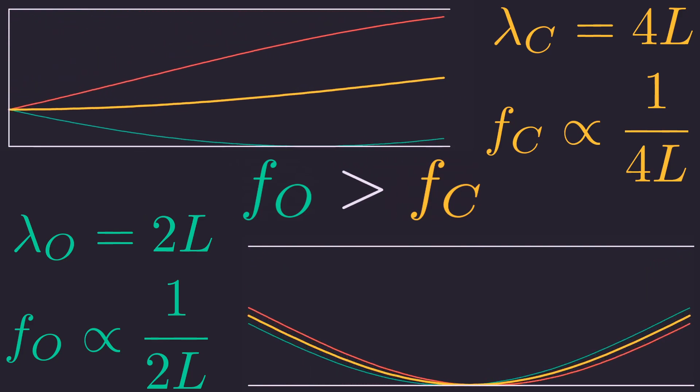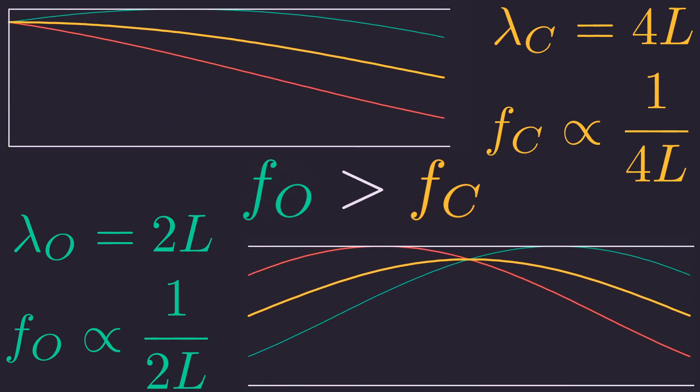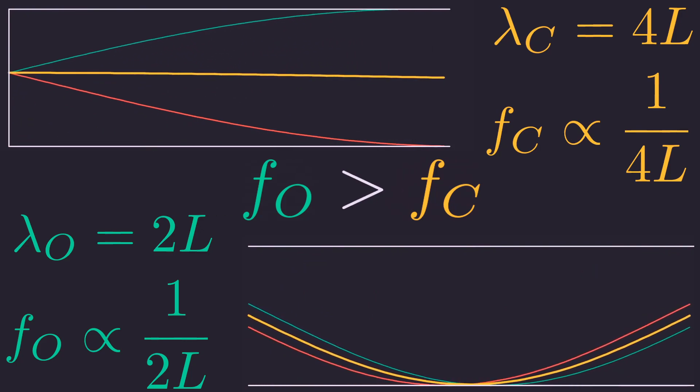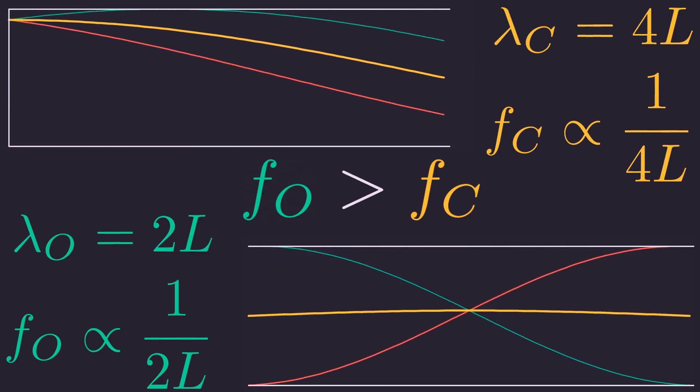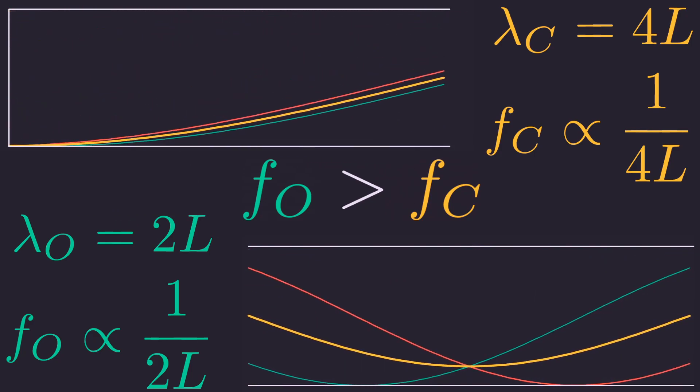And because the frequency is antiproportional to the wavelength, the frequency of the closed pipe is smaller than that of the open pipe. So for any pipe we get the fundamental twice as low when we close one end.